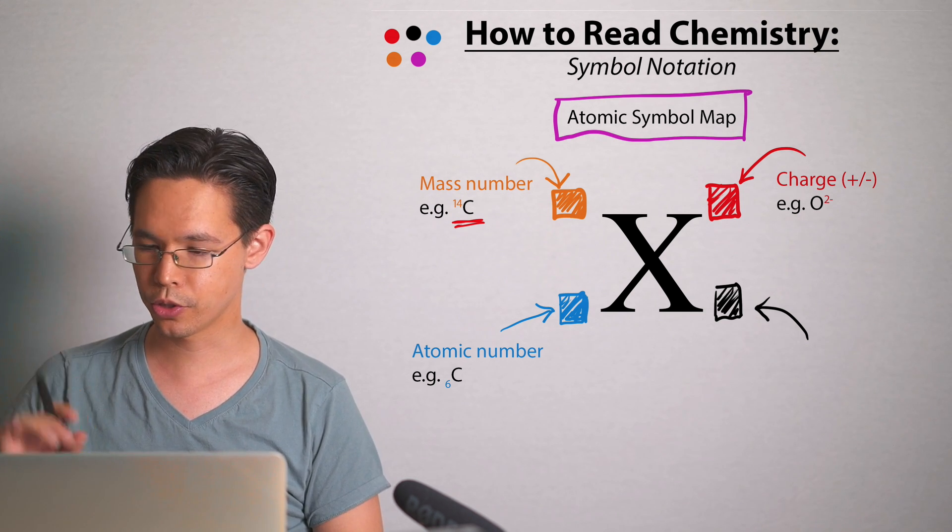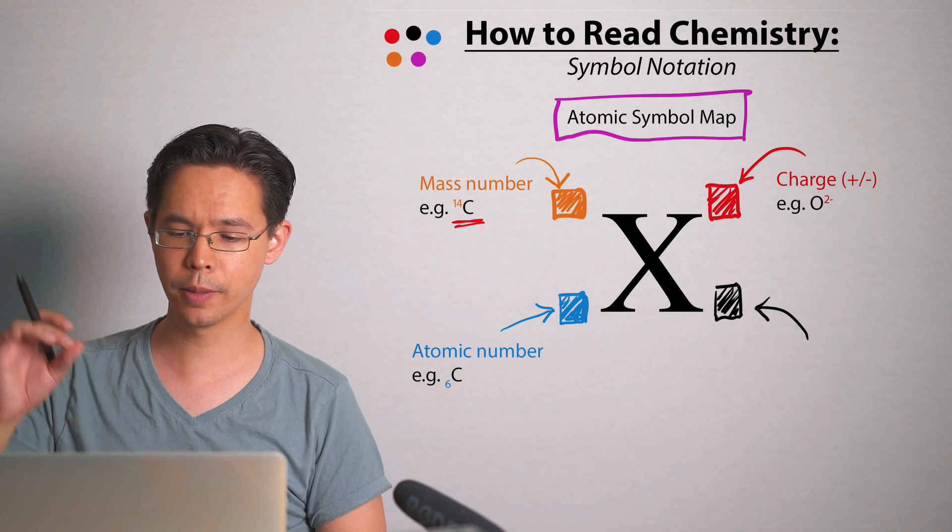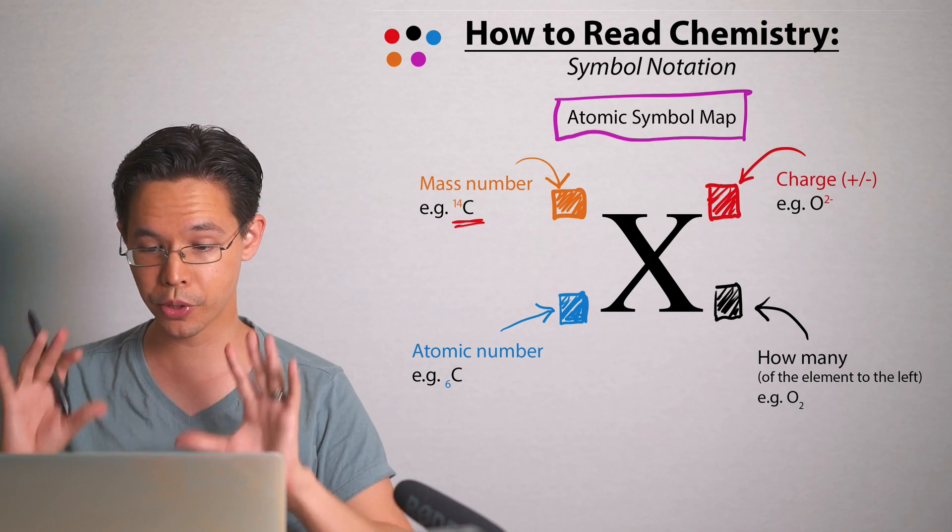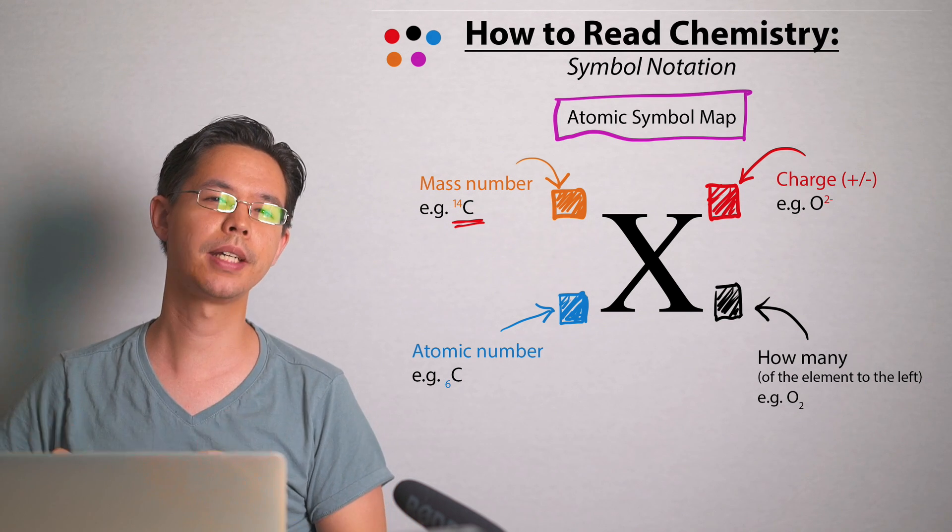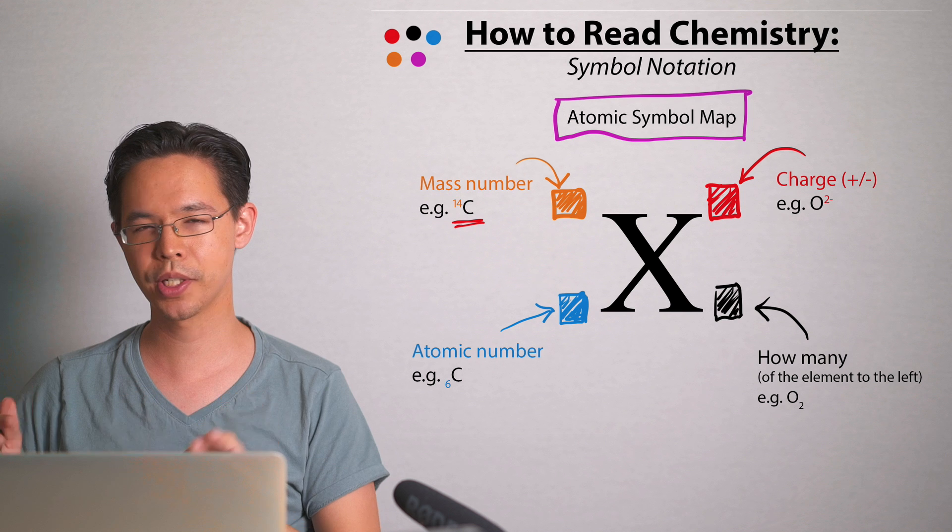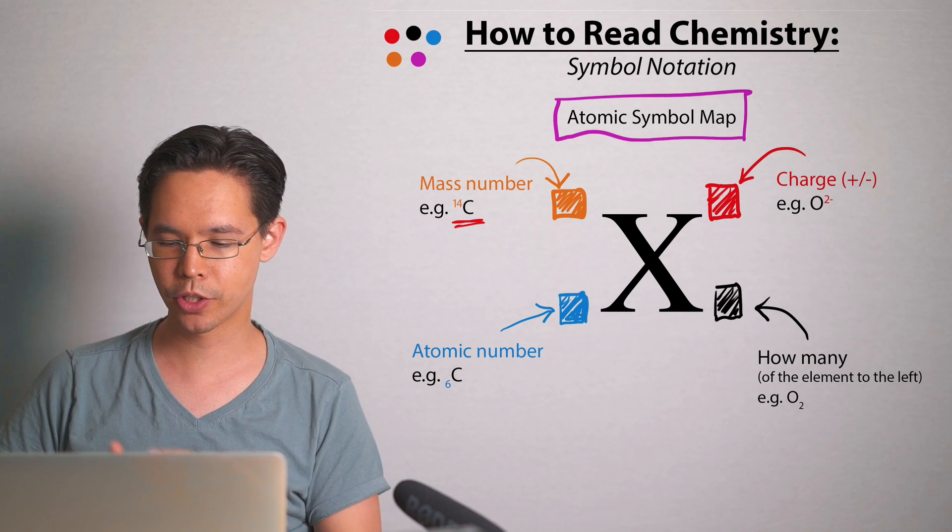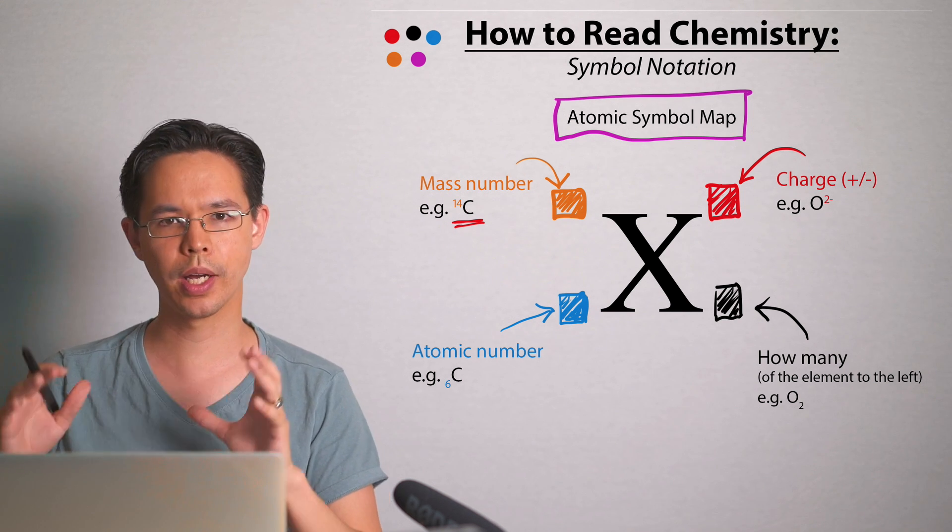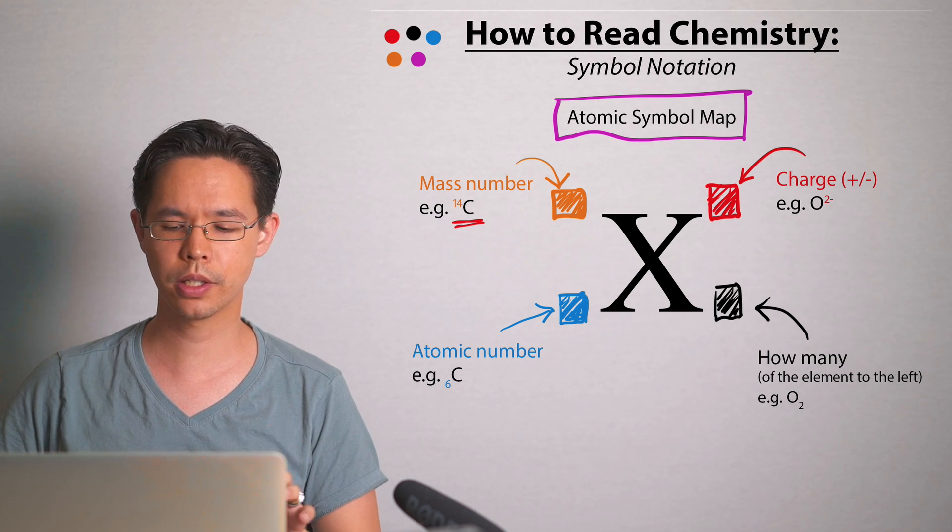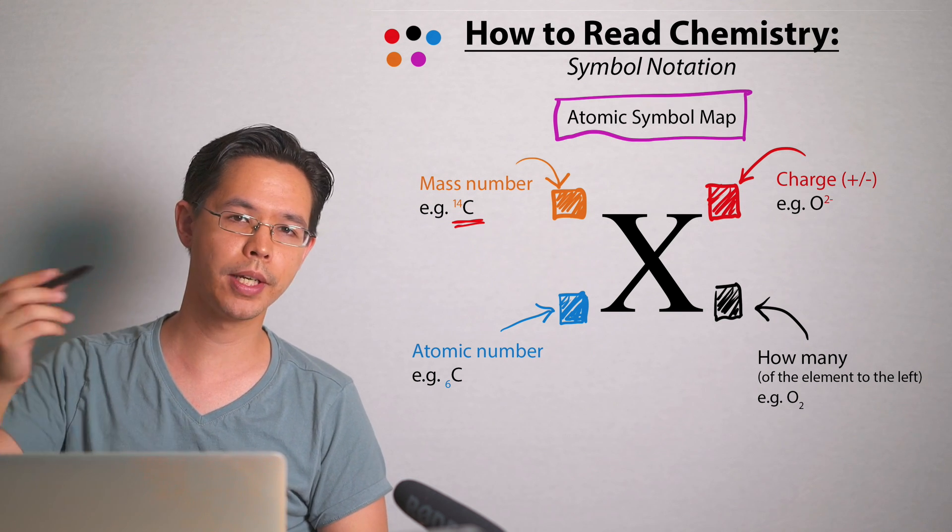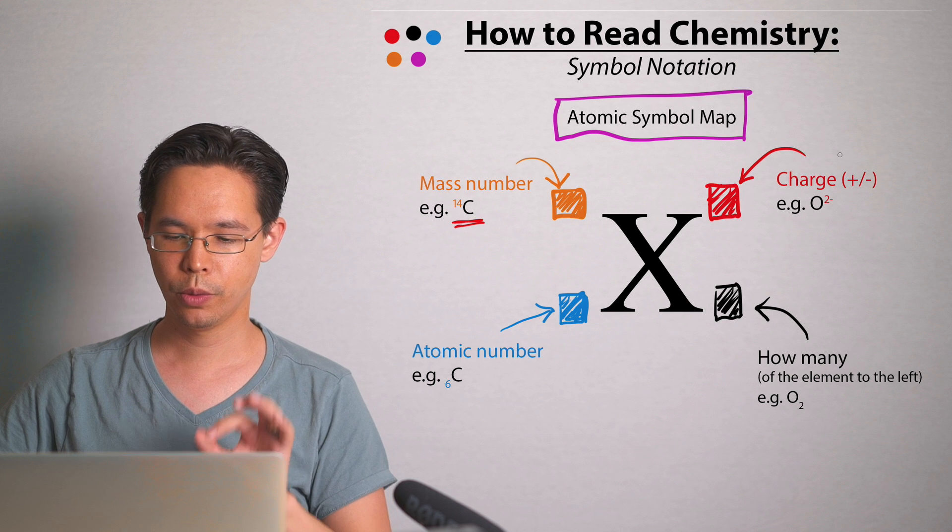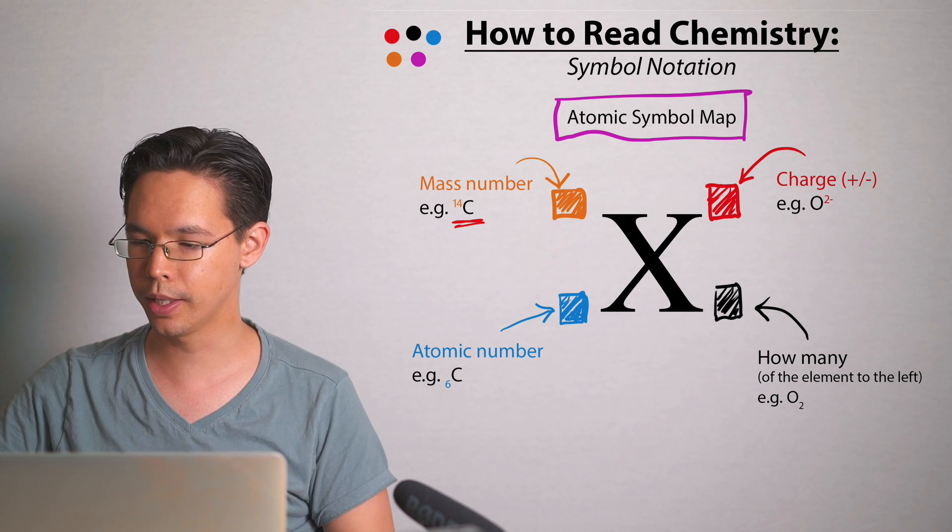In the bottom right hand corner, that is where the most frequently you'll see—that is how many of this element. It's usually pointing to the elements to, I'm pointing to, my left, pointing to its left. So O2, oxygen molecule, you can see the little two and it's pointing to the symbol on its left, which would be the oxygen.